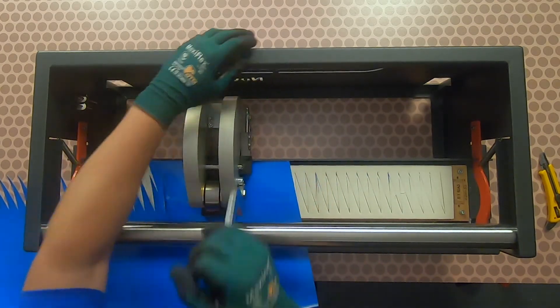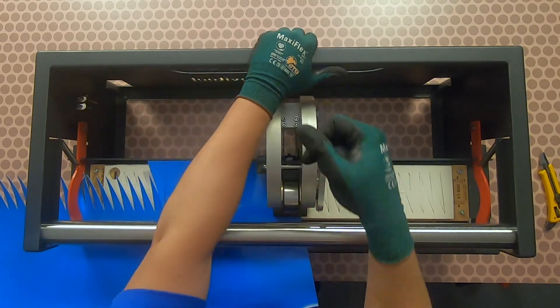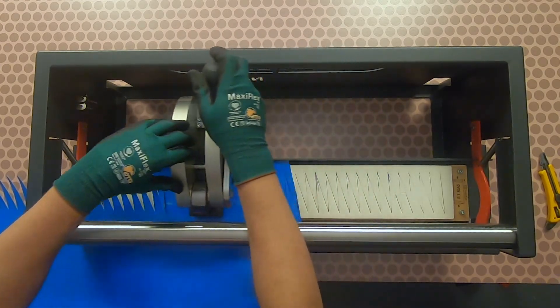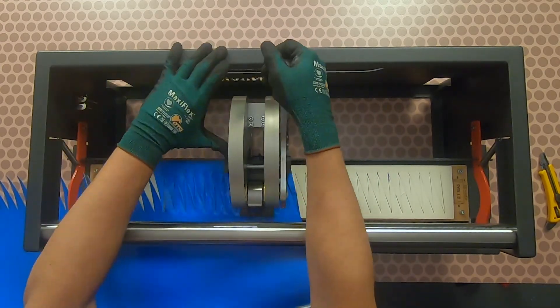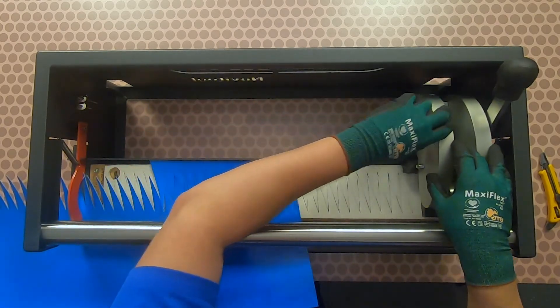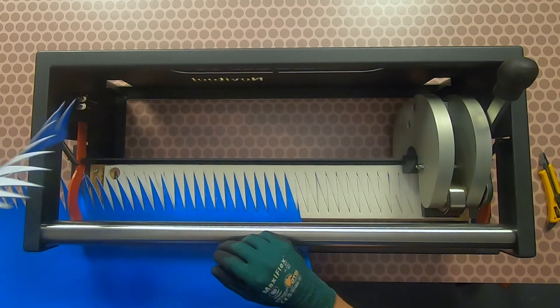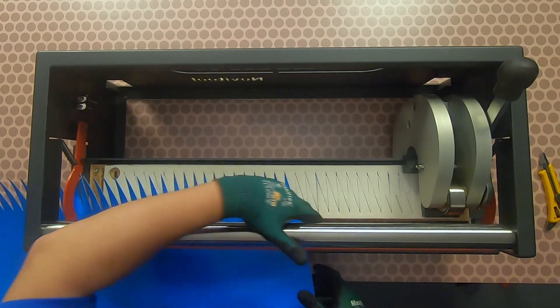Continue punching the entire width of the belt until it's all punched. Remove the excess belt and unclamp and remove the belt from the unit.